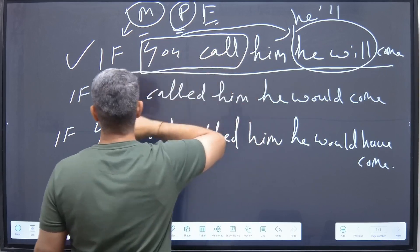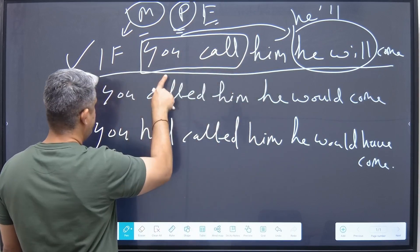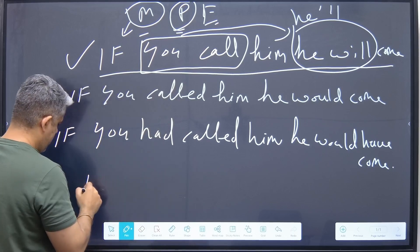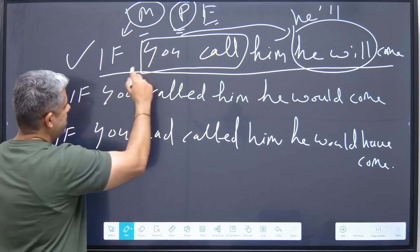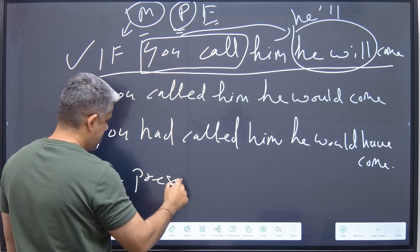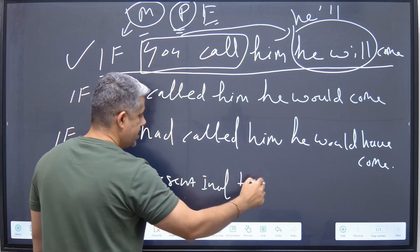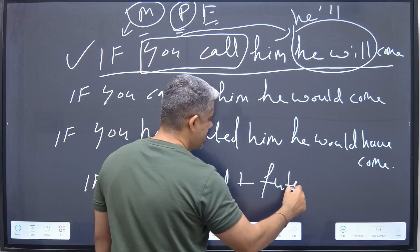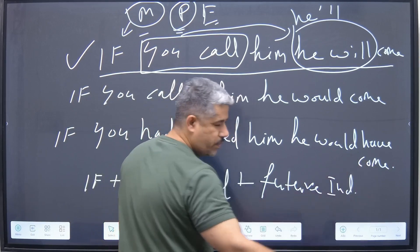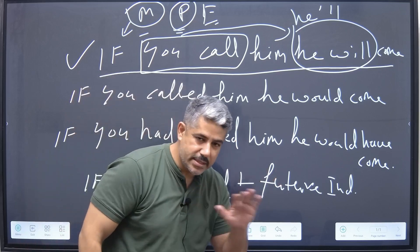And form — for this sentence, the form is: if plus present indefinite plus future indefinite. That's the form part. So this makes your sentence understanding complete.